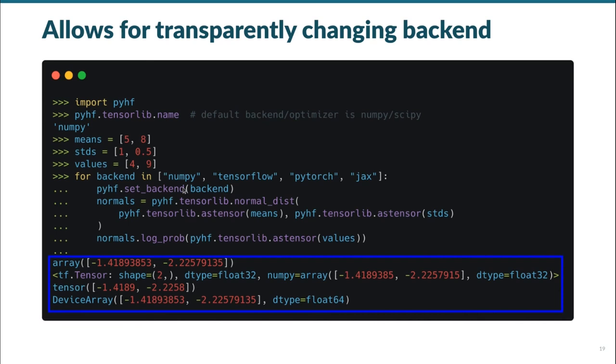In this example, we see that using PyHF's API, we were able to build two normal distributions, and then evaluate their log PDF for particular observation values in the native tensor representation of each backend, all of course giving consistent values.